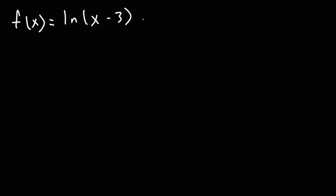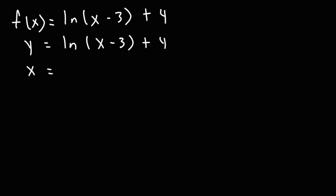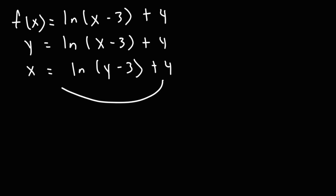We're going to have f of x is equal to ln of x minus 3 plus 4. Go ahead and find the inverse of this function. To begin, just like before, we're going to replace f of x with the y variable. Next, we are going to switch x with y and vice versa. So we're going to have x is equal to ln of y minus 3 plus 4. Now we're going to solve for y — first, I'm going to move the 4 from the right side to the left side.